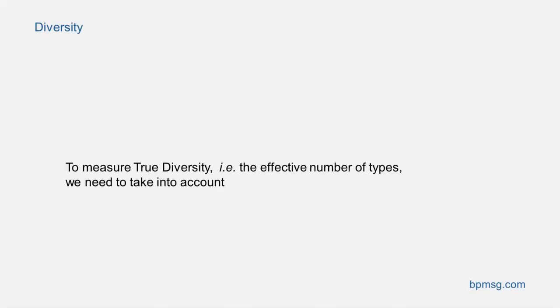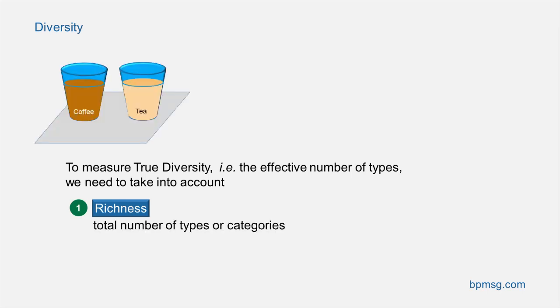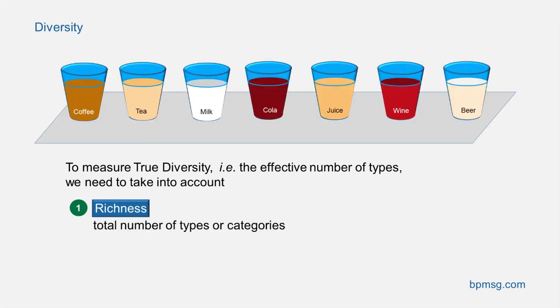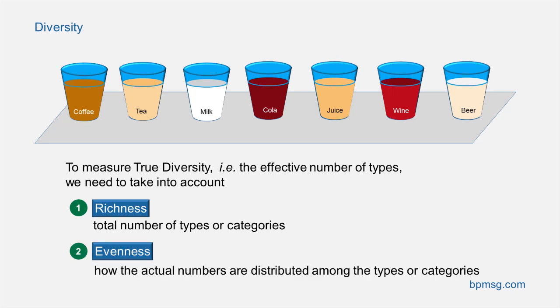What can we realize from these examples? To measure the true diversity, or in other words the effective number of types, we need to take into account richness — the total number of types or categories — and evenness, how the actual numbers are distributed among the types or categories.